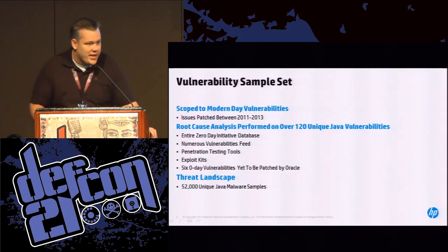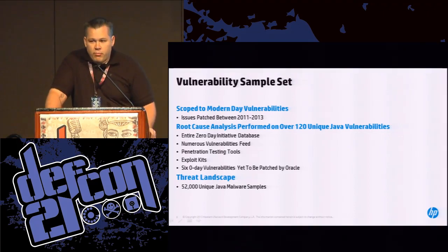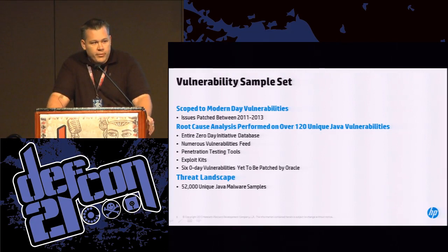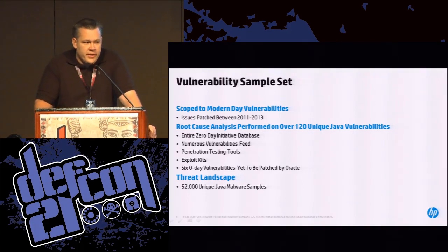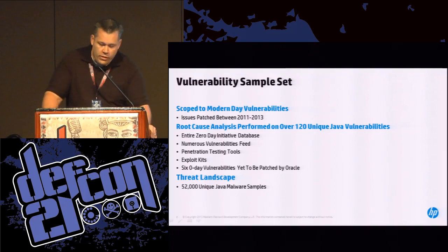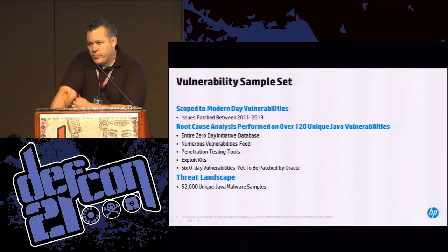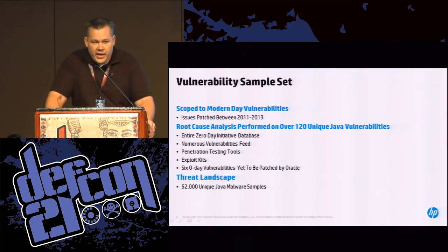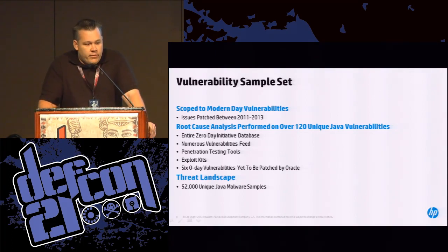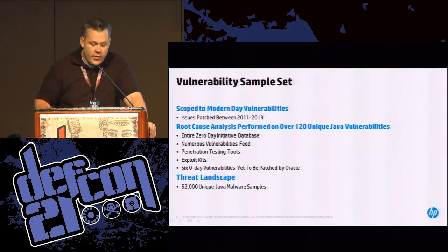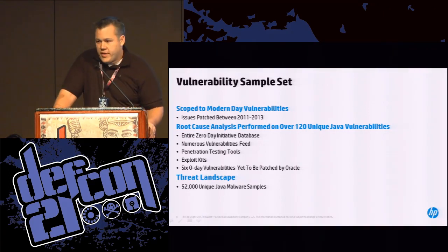Let's talk about the sample set. We scoped ourselves to modern-day Java vulnerabilities — every issue patched between 2011 and 2013. We performed a root cause analysis on over 120 unique Java vulnerabilities. This is probably the largest collection of Java vulnerabilities outside of Oracle or the NSA or some other nation states. We had the entire zero day initiative database, numerous vulnerability feeds, all the big-name penetration testing tools, and we actually had six Java zero days already submitted to Oracle for patching. When we looked at the threat landscape, we worked with Reversing Labs, who provided a sample set of 52,000 Java malware samples so we could understand what's actually being used out there today.